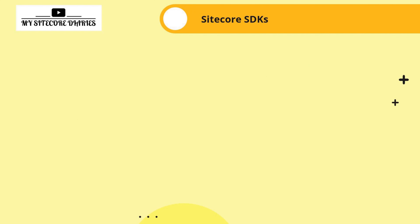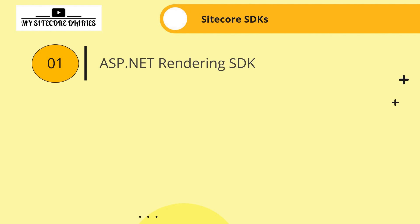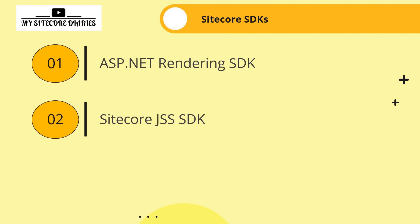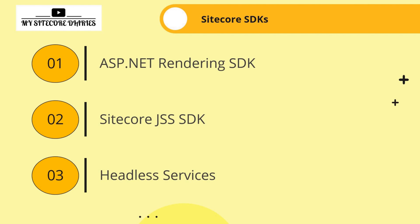Let's start with the Sitecore SDKs. The first one is the ASP.NET Rendering SDK, which supports ASP.NET. We'll see it in detail in a future slide. Then we have the Sitecore JSS SDK, used for JSS development. And then we have Headless Services, used for pure headless development. These are the three Sitecore SDKs available.